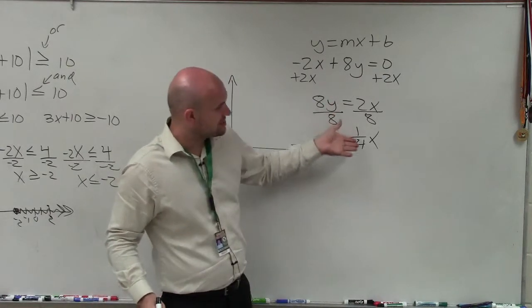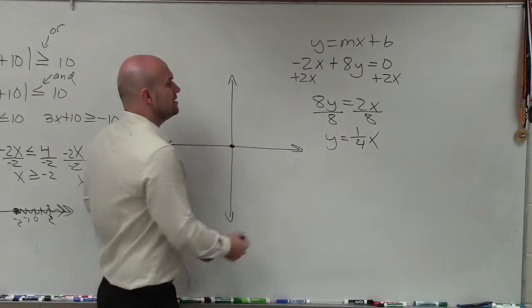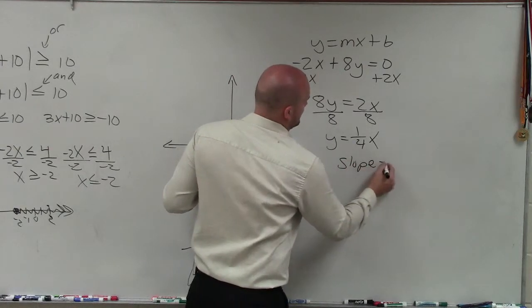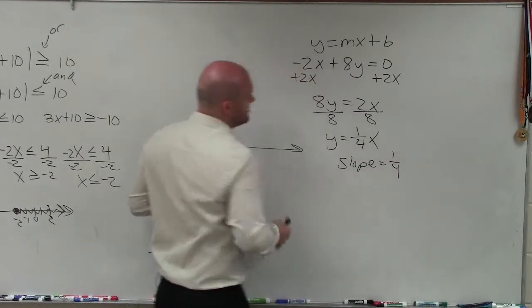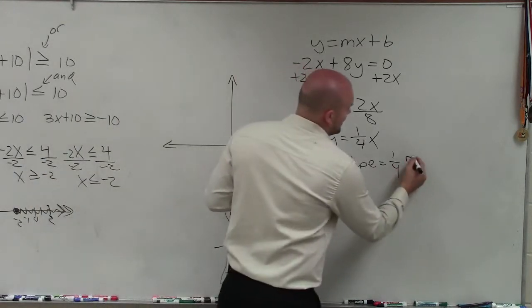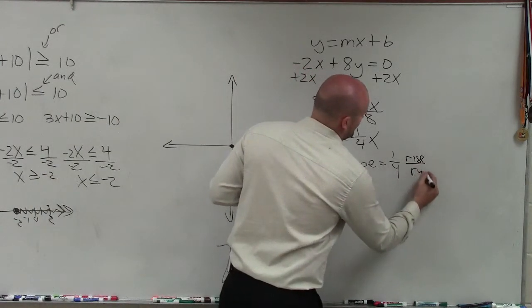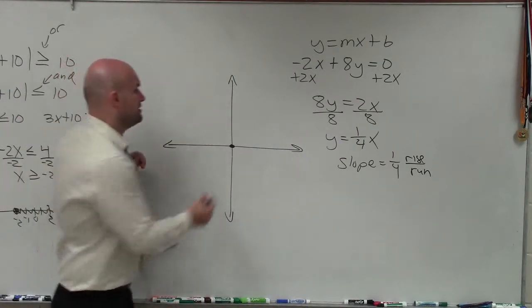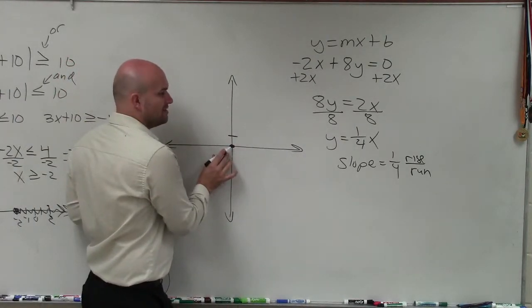Now I'm going to use the slope to identify my next point. Remember, slope is equal to 1/4. So that means the change in the y values over the change in the x values of any two points. A lot of times we also say rise over run. So if the change in the y values is a positive 1, that means I can go up one unit from my y-intercept.